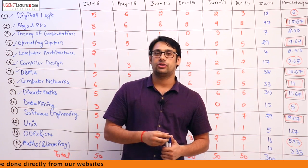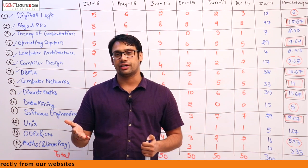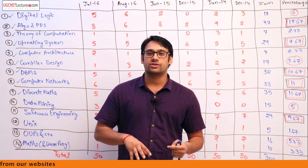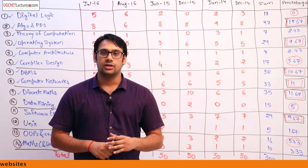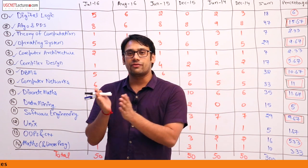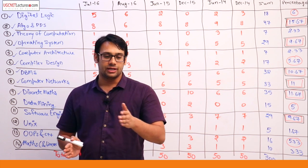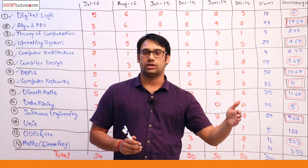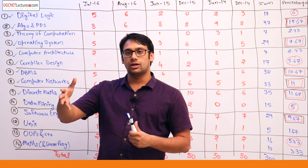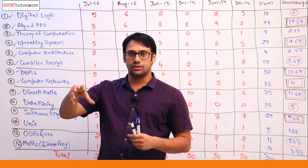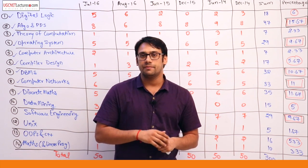For GATE examination, you need at least 25 marks out of 100 for computer science to qualify, but scoring 25 out of 100 is not going to solve your problem either. After this you are going to have rankings, and according to those rankings you get colleges. For JRF in UGC-NET, you need to be in the top 6%.